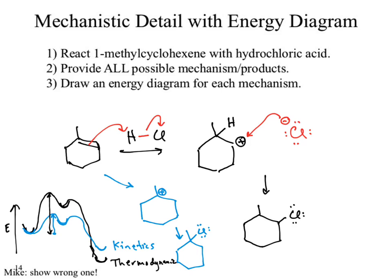A huge section of second semester involves saying, what's the kinetic product, what's the thermodynamic product, and what are the conditions that are going to force one over the other? Most of those conditions come out of looking at your energy diagram and being able to interpret it. When did you learn about kinetics and thermodynamics? In 152. Second semester OCHEM is really just a replay of second semester general chemistry but now applied. We don't have to quantify the difference - we just say it's going to be forced one way or another.